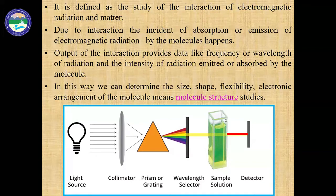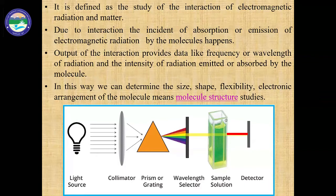From this data, in terms of physics, we can understand about the size of that material with which the radiation has been interacted. We can identify the shape of that material, the flexibility of that material, or the electronic arrangement of that material. As a whole, in a nutshell, we can get an idea about the molecular structure of that material. So if a radiation is interacting with a molecule and I am getting information, I can get an idea about the structure of that molecule — and that whole phenomenon is known as spectroscopy.